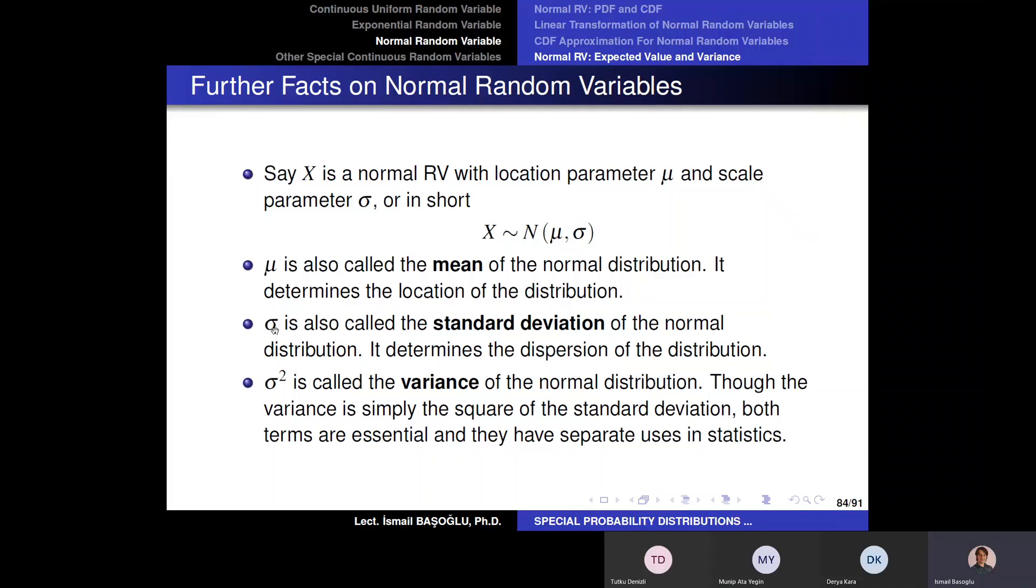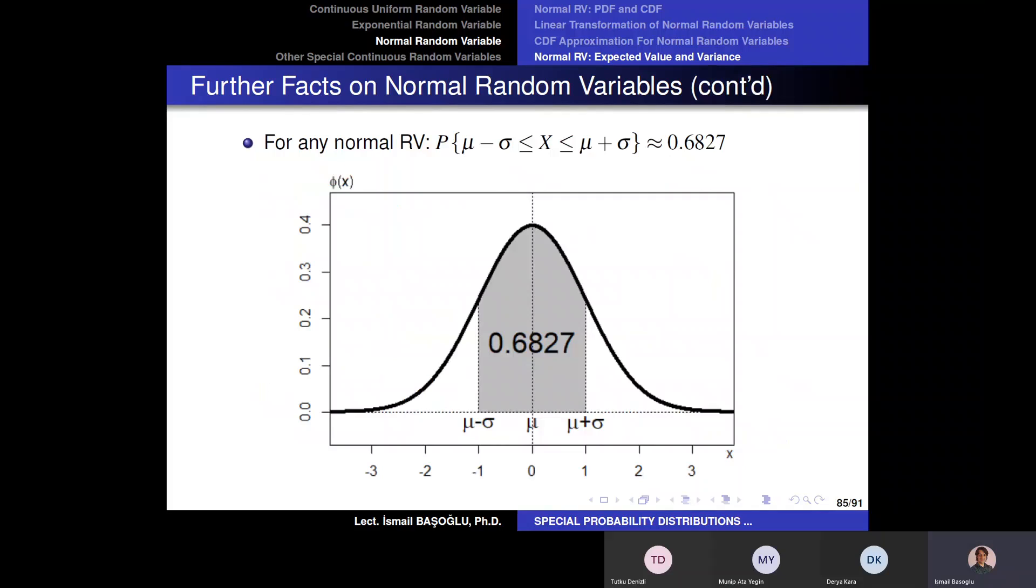And for normal random variable, sigma will be standard deviation and sigma square will be variance. Now, let me give you further information. And these are not very important, actually, because you can always find these values from the CDF table. In any normal distribution, the probability that this normal random variable takes a value at most one standard deviation far from location parameter will always be equal to 0.6827. In any normal distribution this is true.